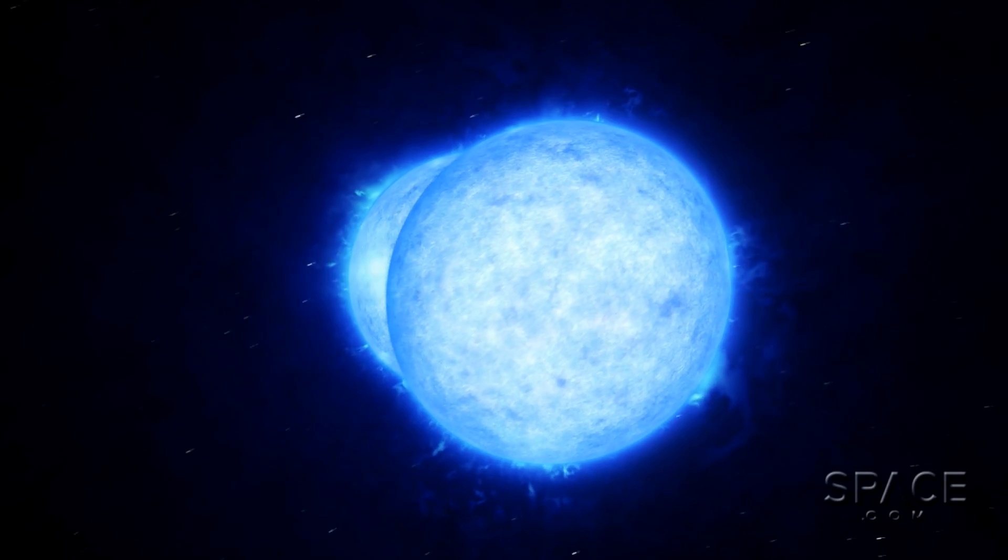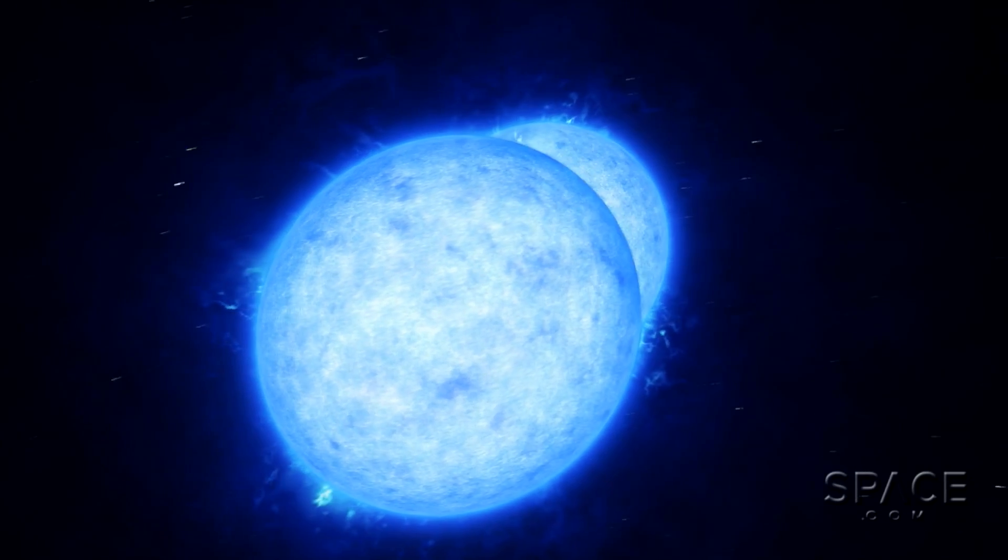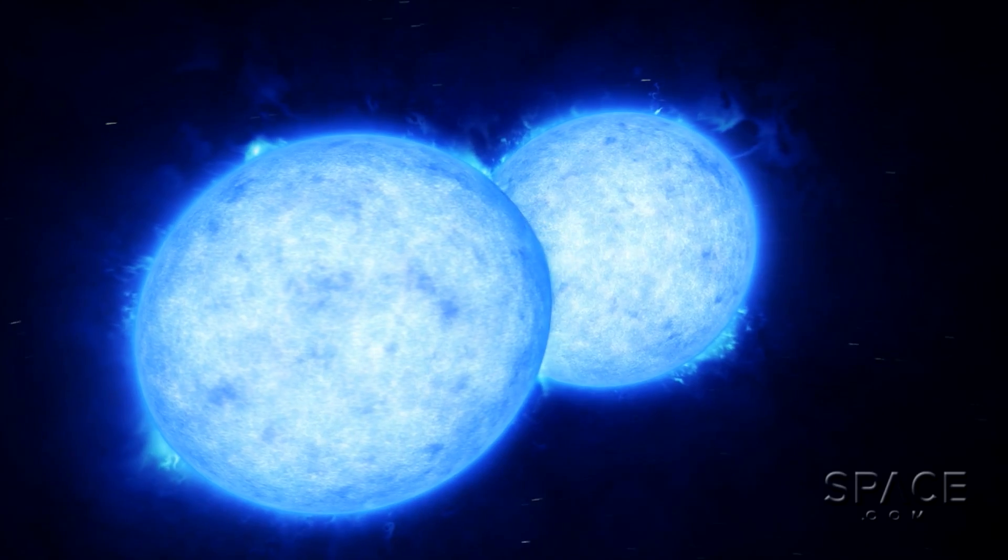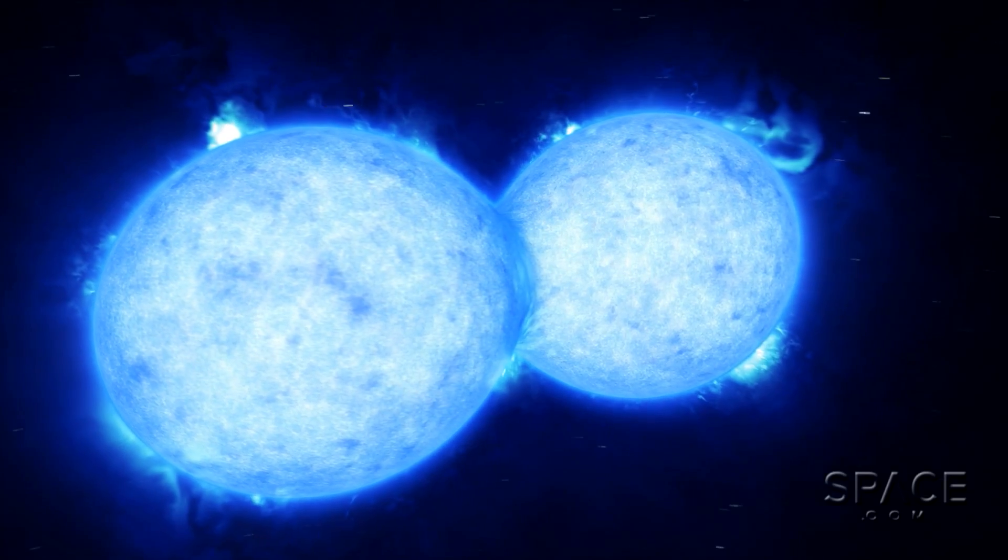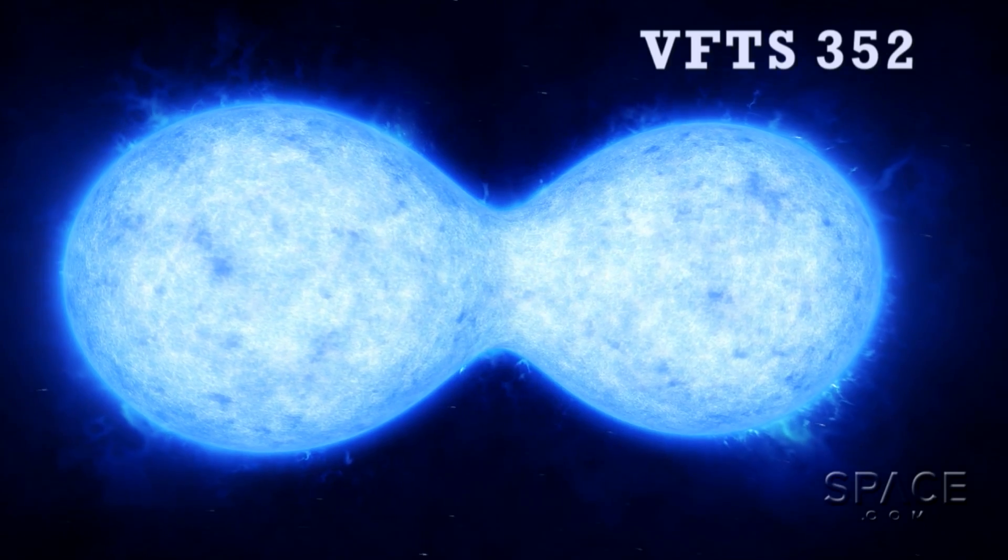This cosmic couple is one hot mess. With a combined mass 57 times that of our Sun, and surface temperatures higher than 40,000 degrees Celsius, the double star system known as VFTS 352 is on a trajectory for disaster.